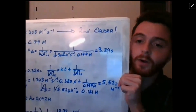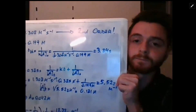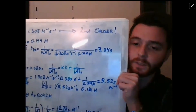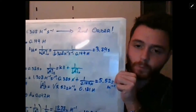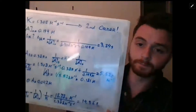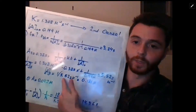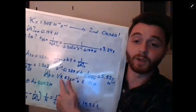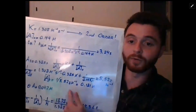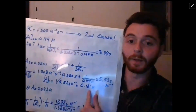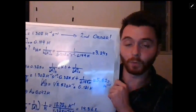Since we have the inverted value, we take one over that value to get the actual concentration. Applying significant figures, this gives us 0.181 molar.